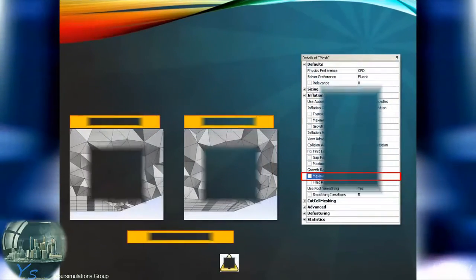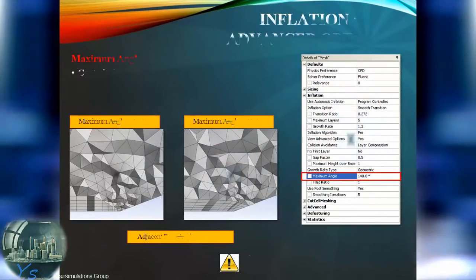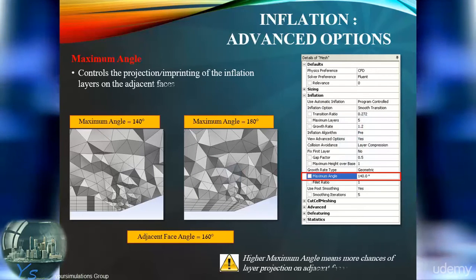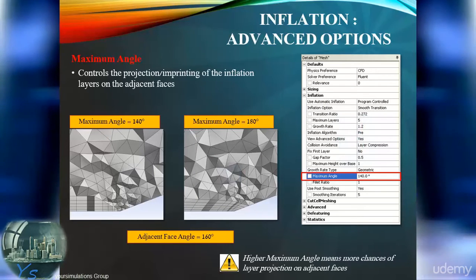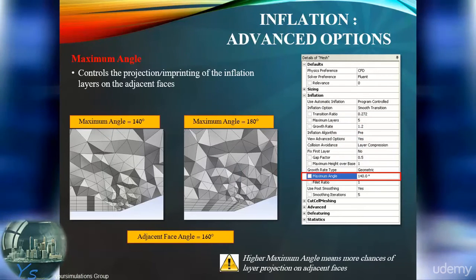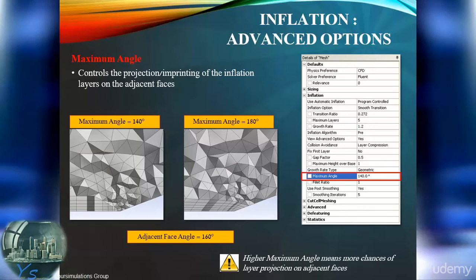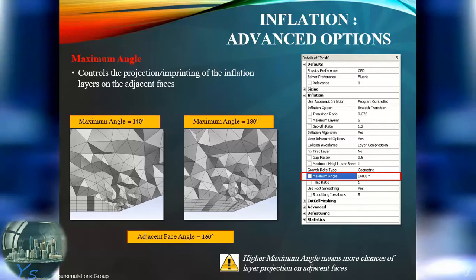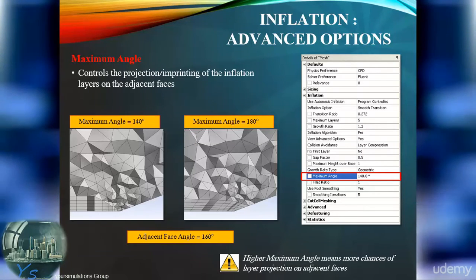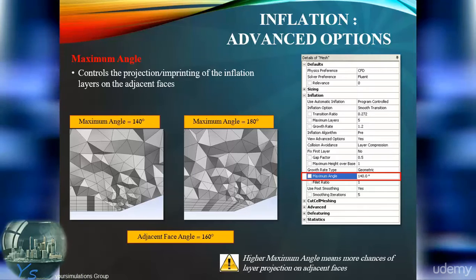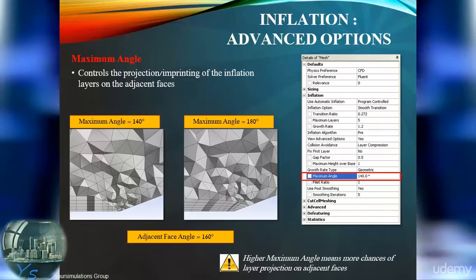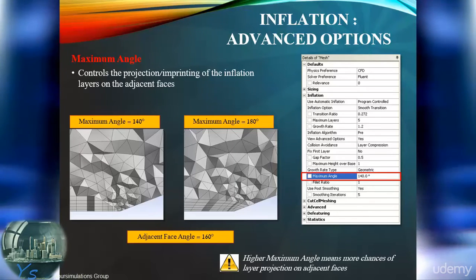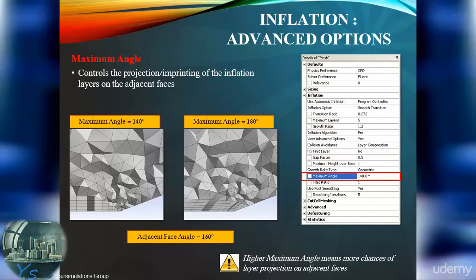Inflation layers are usually removed close to obtuse angles. By increasing the maximum angle, this can be avoided by projecting the layers onto the adjacent faces. This is only relevant if no inflation layers grow from such walls, as visible in the two images.